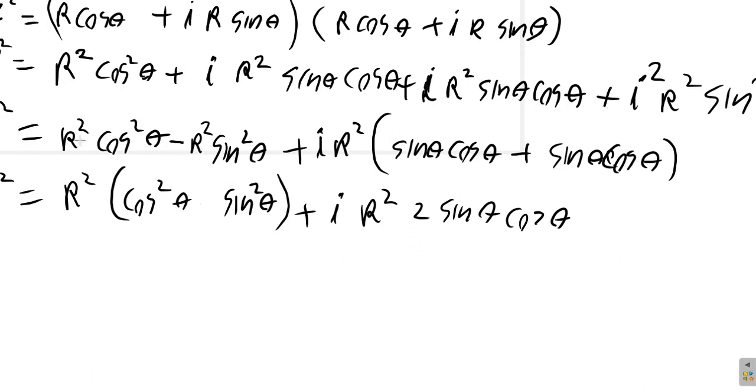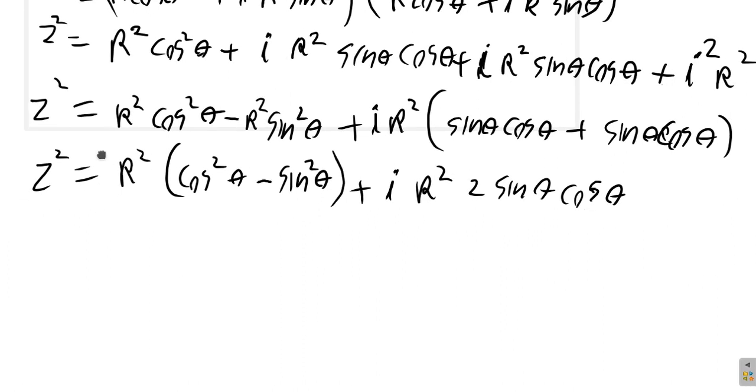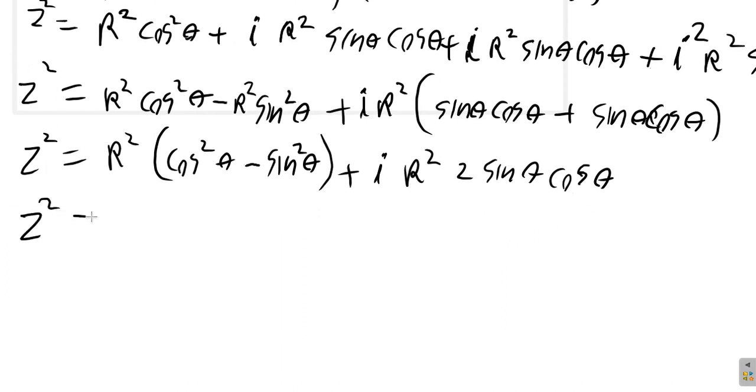So there would be no 1 here at all. So this would be R squared cos squared theta minus R squared sine squared theta. And then this would be R squared outside the bracket cos squared theta minus sine squared theta. And then this would be I R squared, sine theta cos theta plus sine theta cos theta, which would be 2 sin theta cos theta. Now what we have here is Z squared equal R squared times what? If you look up your double angle identity, you will see that cos squared X minus sine squared X is cos 2X. So therefore cos squared theta minus sine squared theta is cos 2 theta.